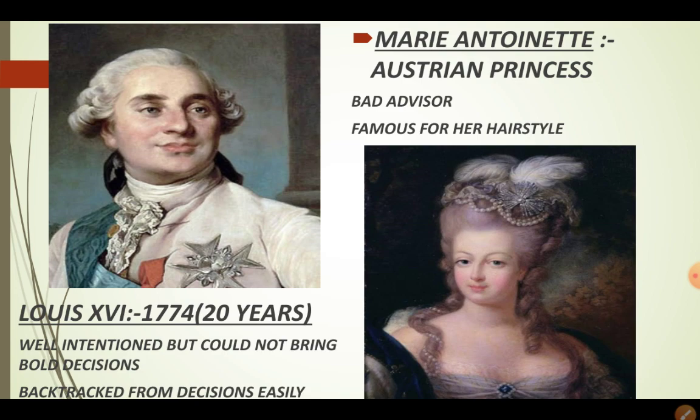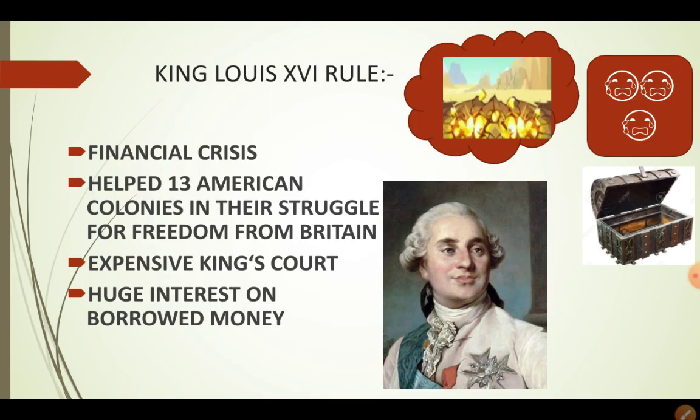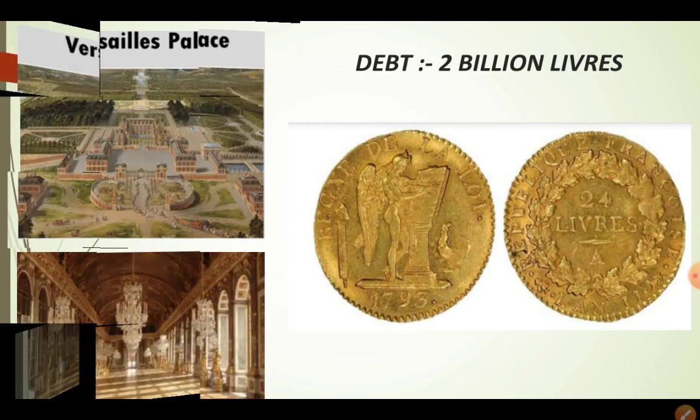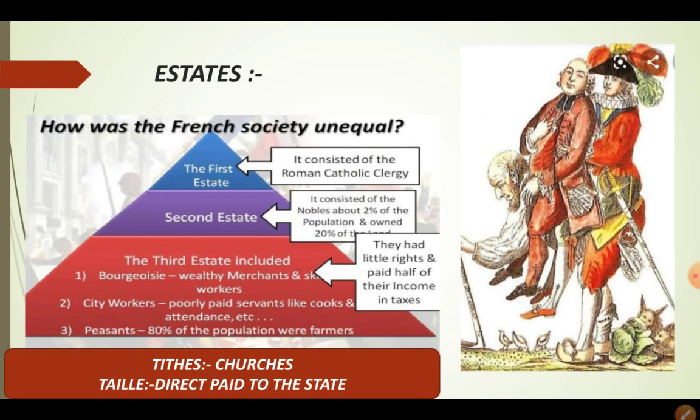He found the treasury empty. He planned to do something to fill his treasury and there was only one option: to increase the taxes. But as we read in our first video, in France taxes were paid only by the Third Estate, and because of this the Third Estate was very angry. But Louis XVI had to increase taxes.